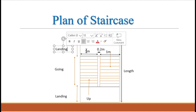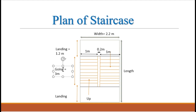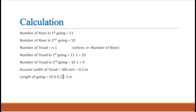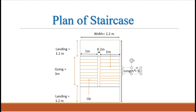Now we have the landing width as 1.2 m and the length of going calculated as 3 m. The upper landing will also equal 1.2 m. Adding these distances together gives the length of the staircase: 1.2 m + 3 m + 1.2 m = 5.4 m.